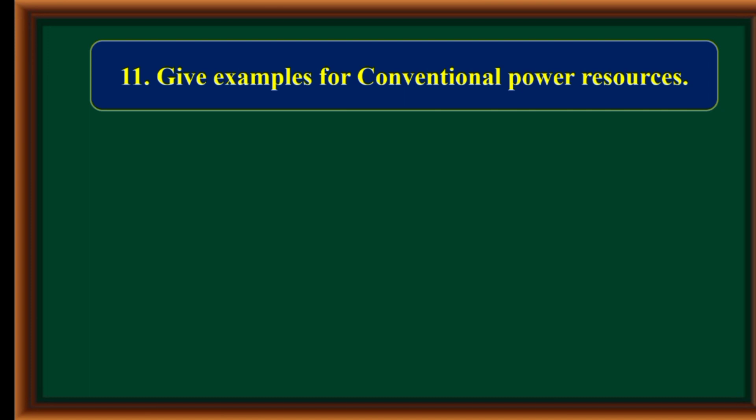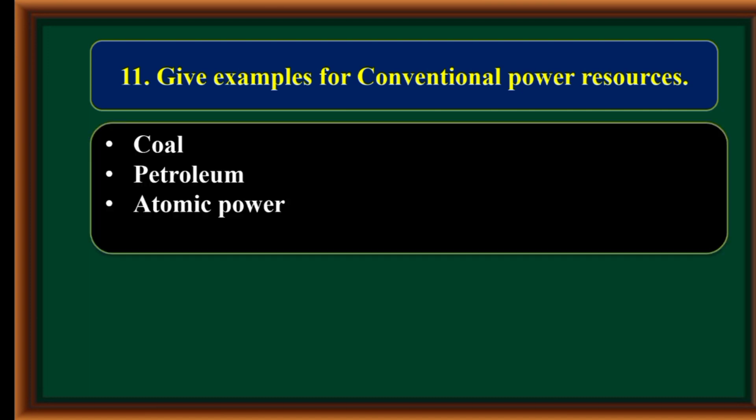Give examples for conventional power resources: Coal, petroleum, and atomic power.